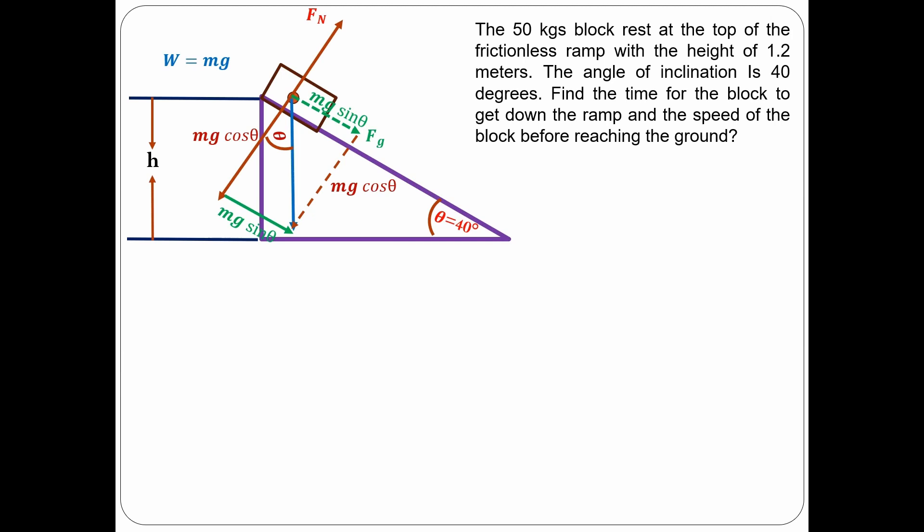Now let's solve a problem. A 50 kg block rests on top of a frictionless ramp with a height of 1.2 meters. The angle of inclination is 40 degrees. Find the time for the block to get down the ramp and the speed of the block before reaching the ground. We already know that the normal force equals Mg cosine theta, and the force that makes the block accelerate, Fg, equals Mg sin theta.